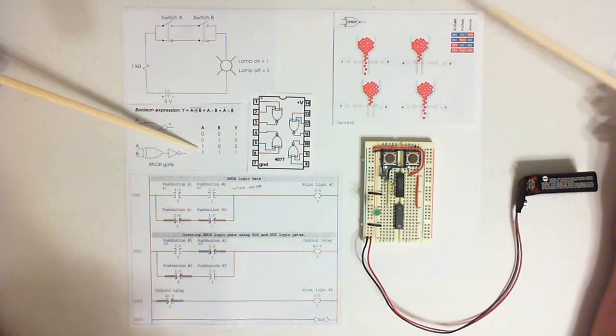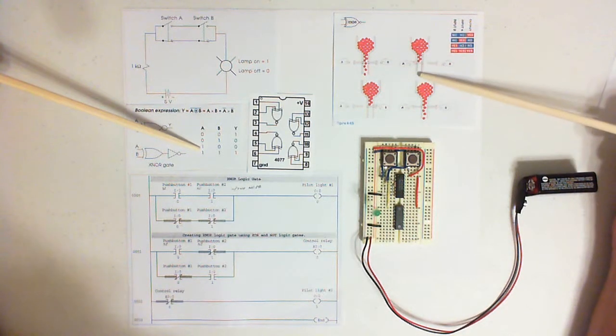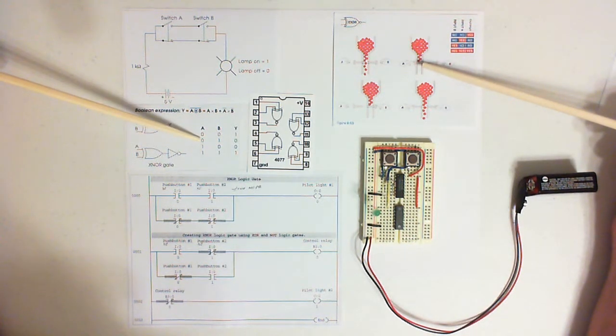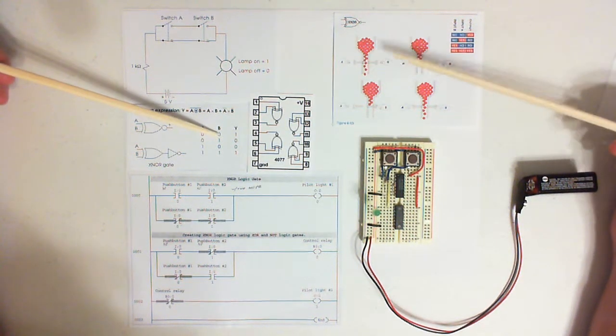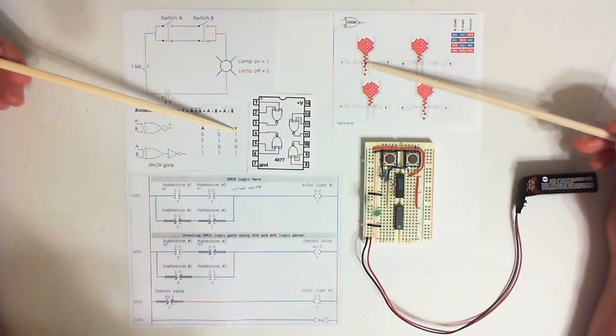This is a truth table. I'll be using this illustration to show exactly what's happening right here. Basically, when you don't press A, you don't press B, you get a logical one.